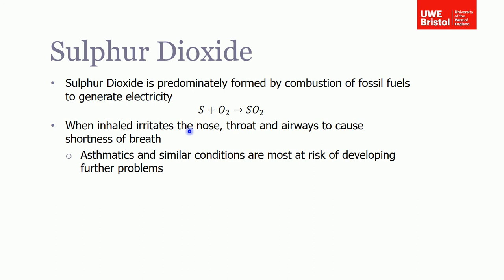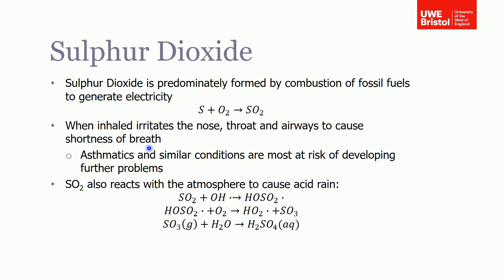This irritates nose, airways, causes shortness of breath. Again, it's another gas that exacerbates conditions associated with the lungs such as asthma and so on. And also risk groups such as asthmatics are at risk of developing further problems as well. However, SO2 as you may remember can also react with the atmosphere to cause acid rain, which is another knock-on consequence of sulfur dioxide.